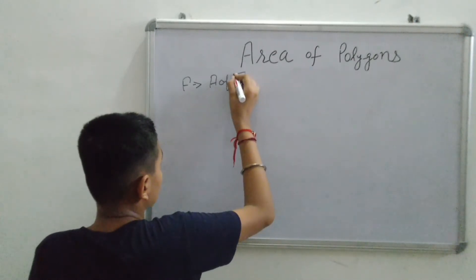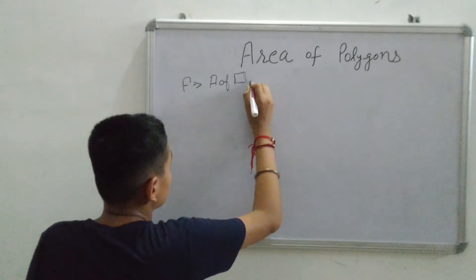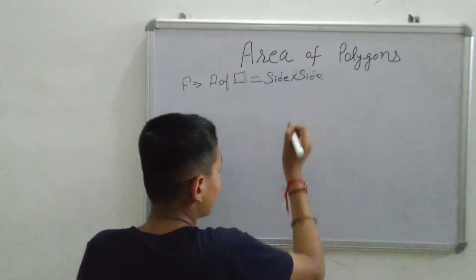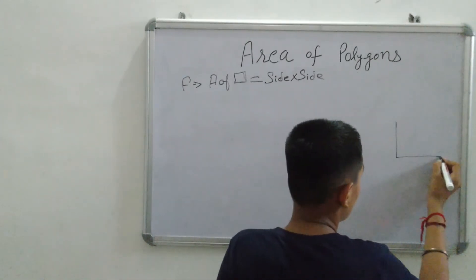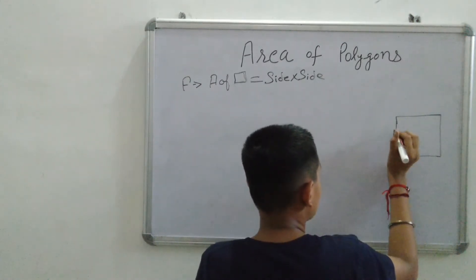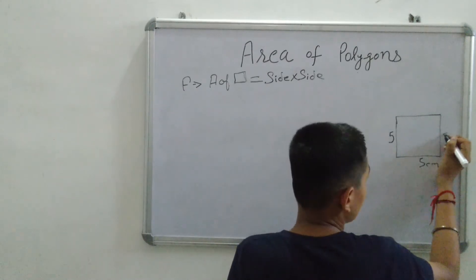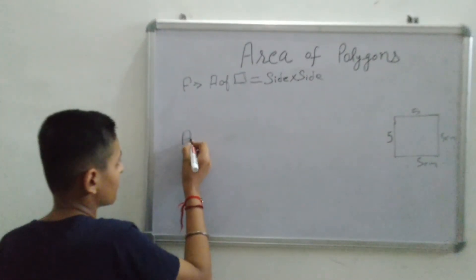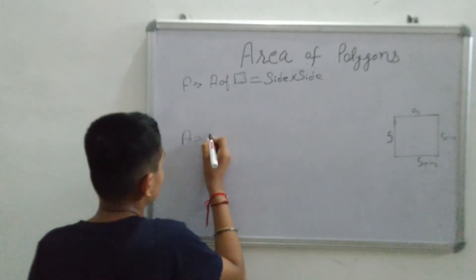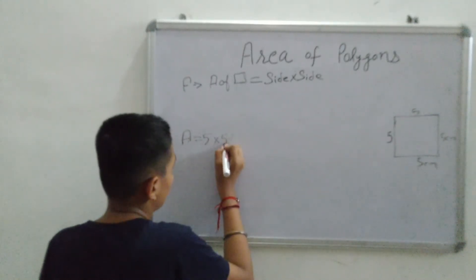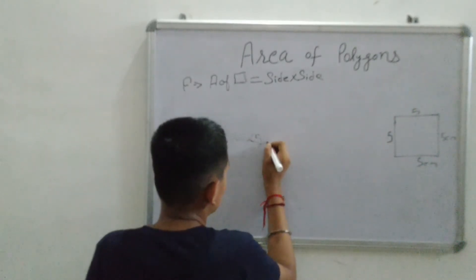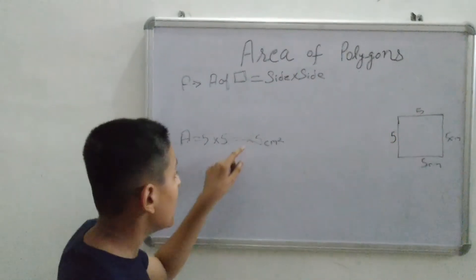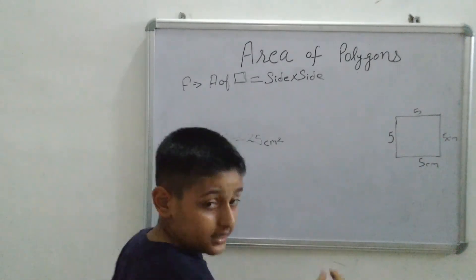The formula for the area of a square is: area equals side into side. Suppose this is our square and each side is 5 centimeters. Area equals 5 into 5, which equals 25 centimeter square. The area of a square is 25 centimeter square.